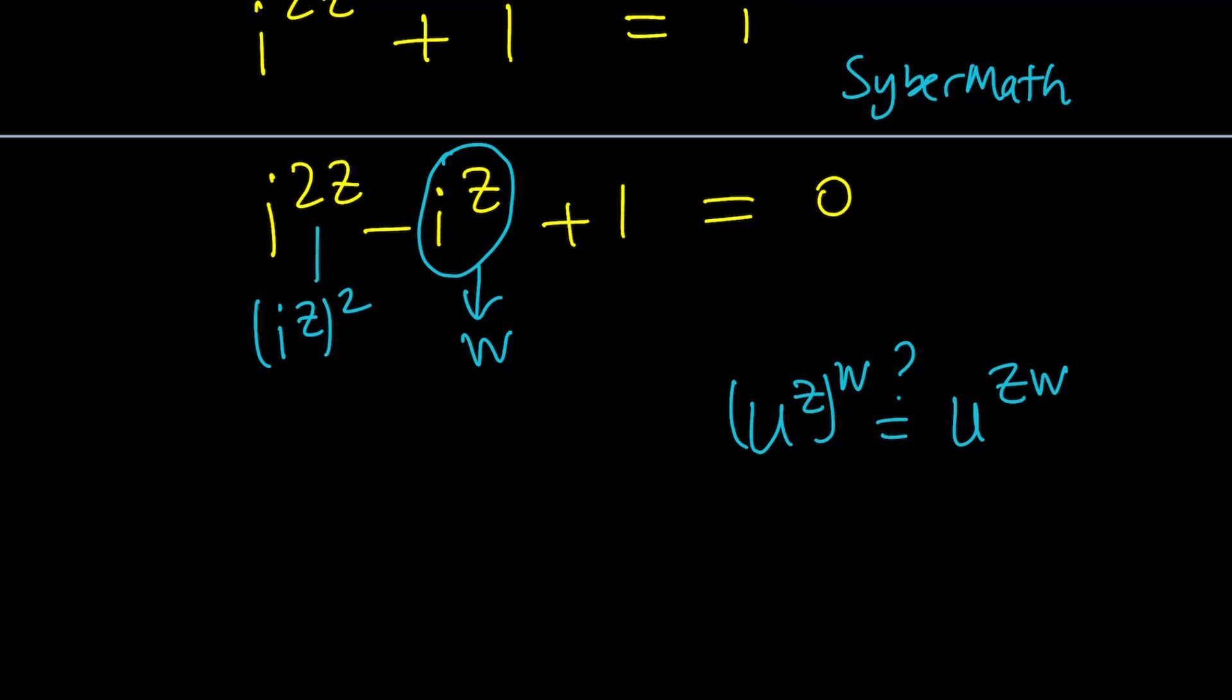So anyways, in this case, let's assume that it works. And now our equation becomes, because i to the z is W, W squared minus W plus 1 equals 0.